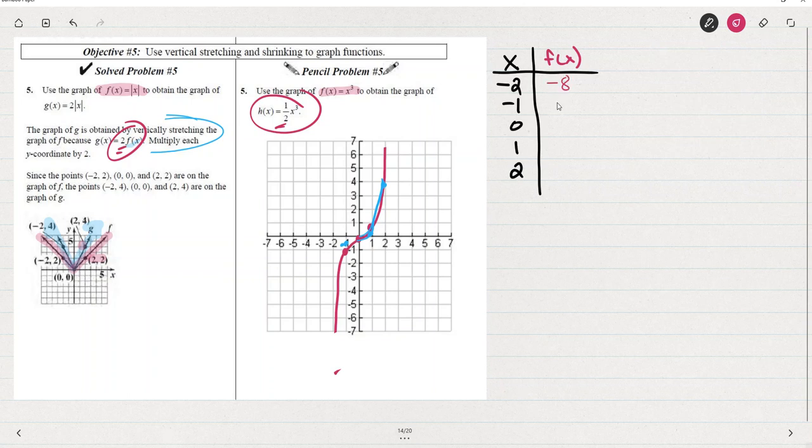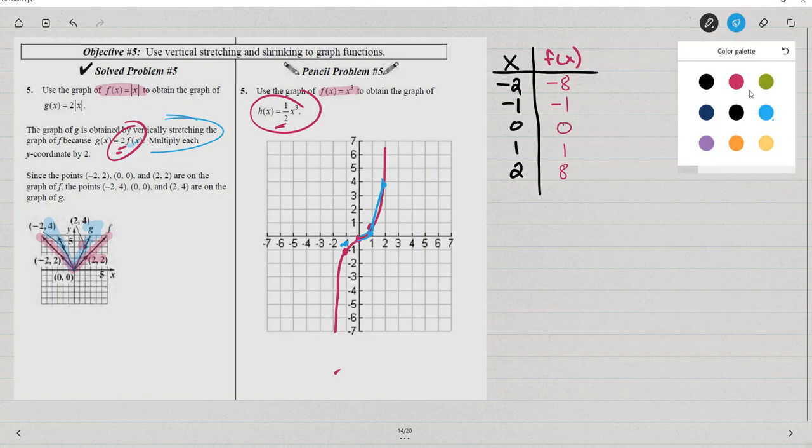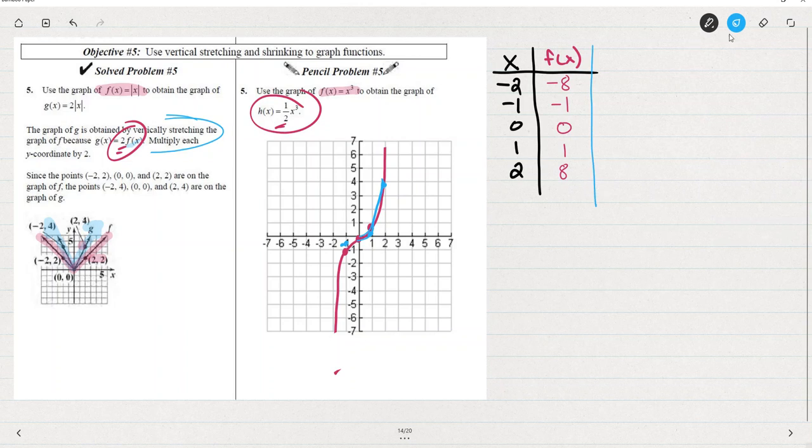If our original function, and this is okay to do with these graphs to just have in mind what some of the points are. f of x, so f of x cubed, negative 2 cubed, negative 2 times negative 2 times negative 2 would be negative 8, negative 1 cubed would be negative 1, 1 times 1 times 1 is 1, 2 times 2 times 2 is 8, so there are some points for our pink f of x, but now our h of x, which is 1 half of f of x.